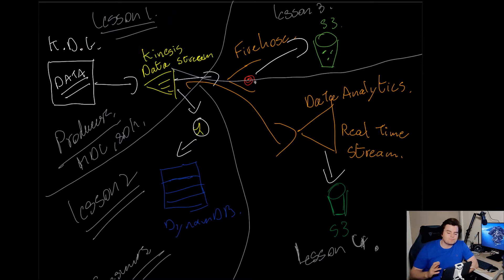So we're looking at four lessons. We're going to go through lesson one where we look at Kinesis data streams and producers in depth, lesson two where we look at consumers in depth, lesson three where we use Firehose to stream straight into an S3 bucket, and then lesson four where we're going to perform real-time data analytics on that stream data.